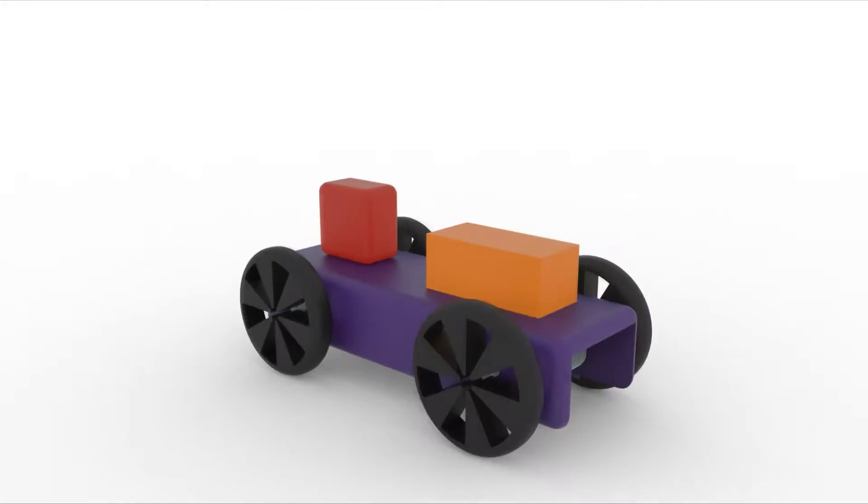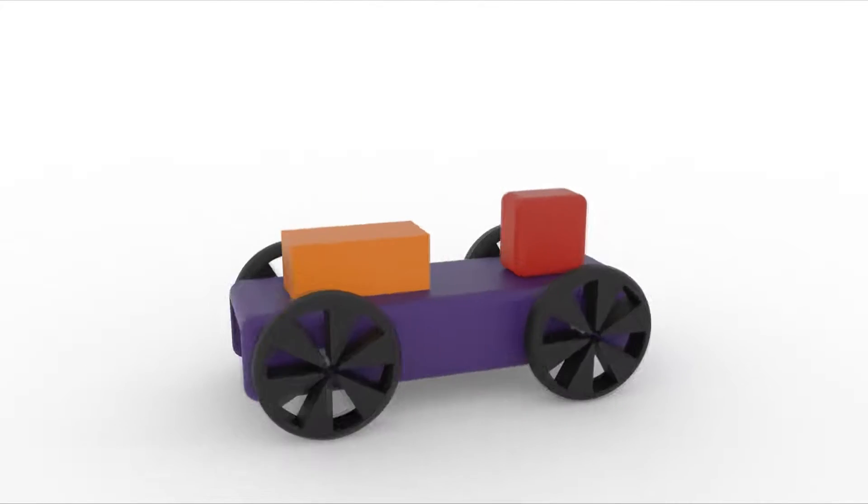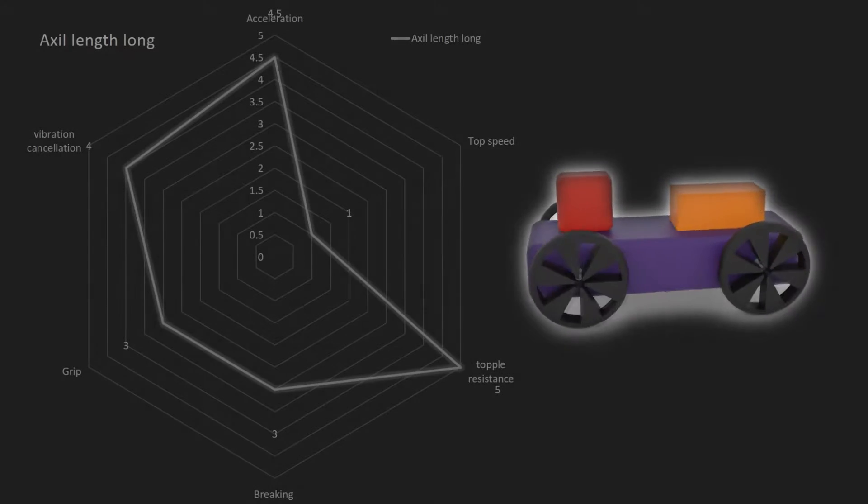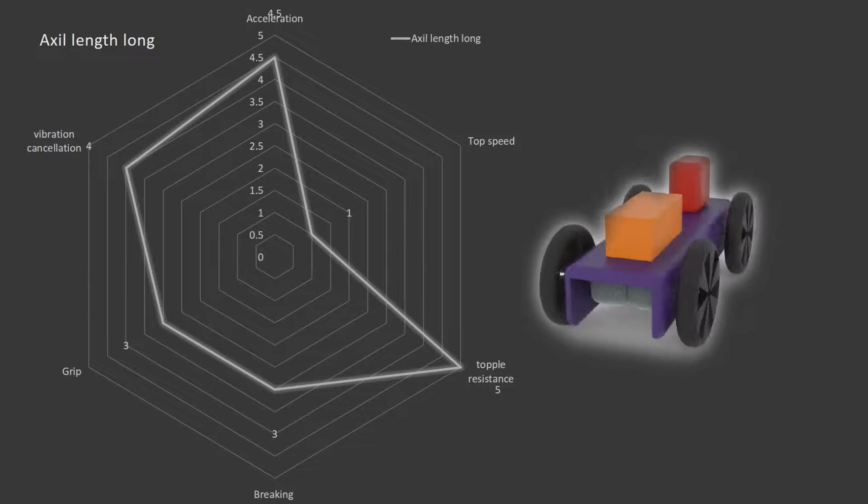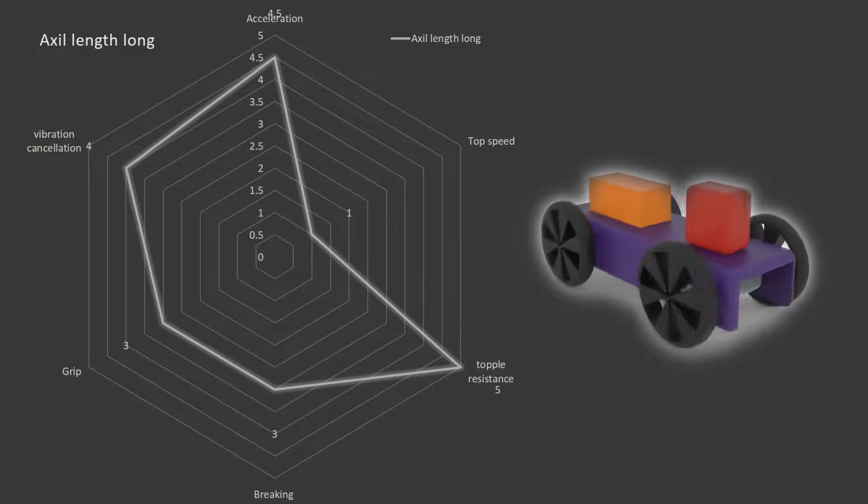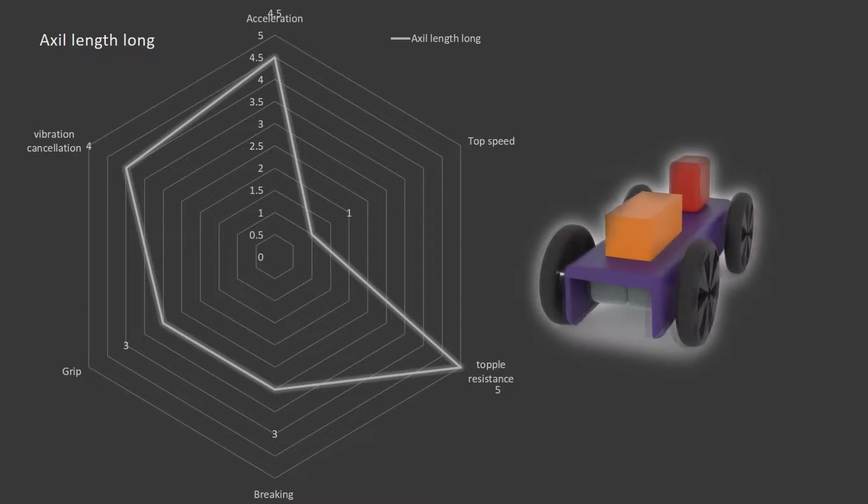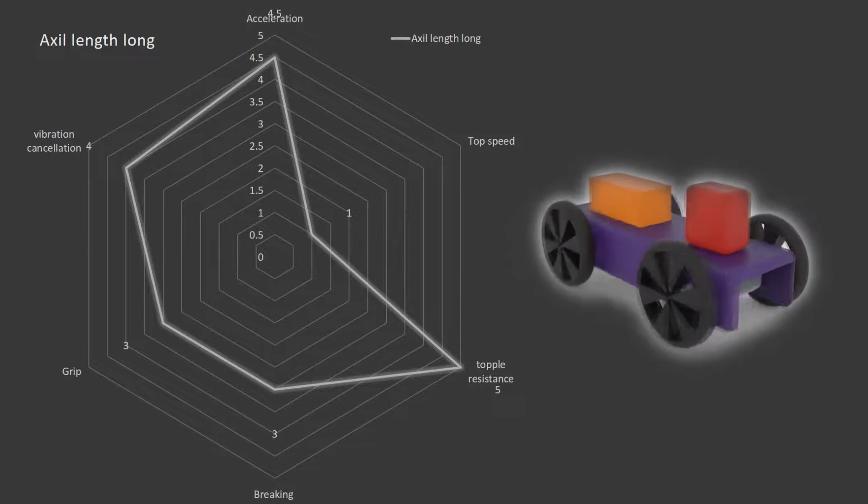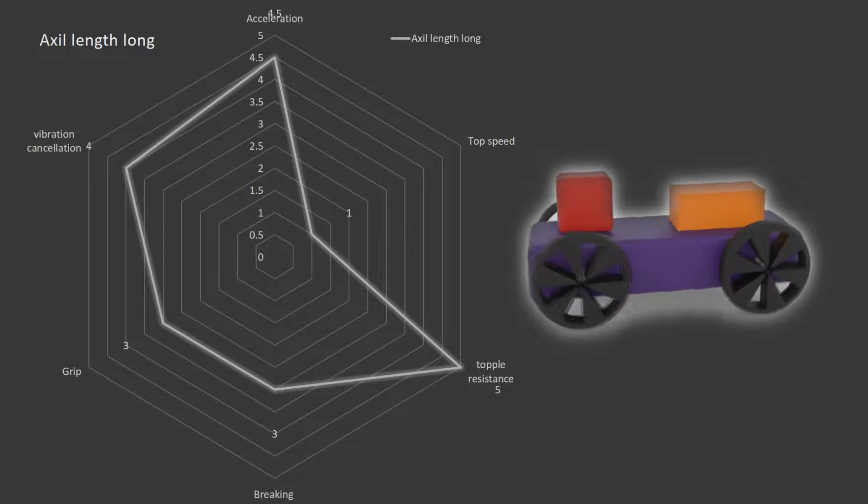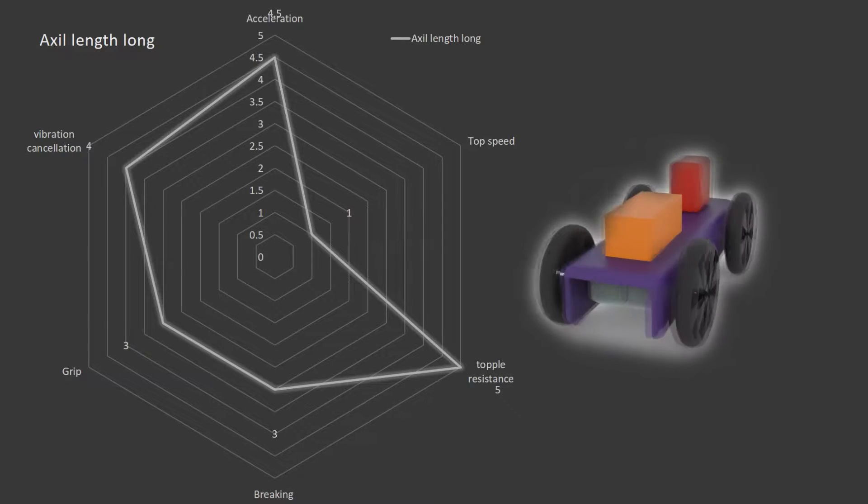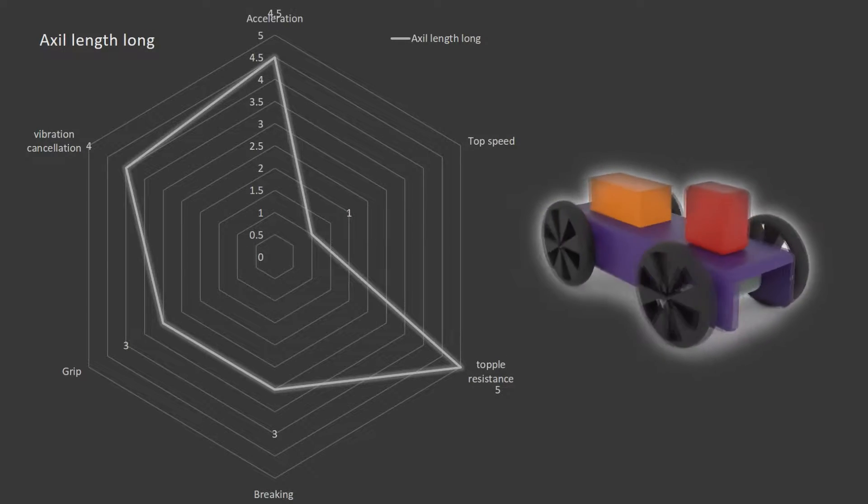These type of robots have wheels far away from the chassis. This distance helps the robot to get vibration cancellation due to rough road. But the greater advantage of this is the toppling resistance. Due to wider base, the robot won't topple and would also vibrate less. This will help the robot to get major acceleration compared to other robots. But with greater acceleration, you get less grip and less control over braking.